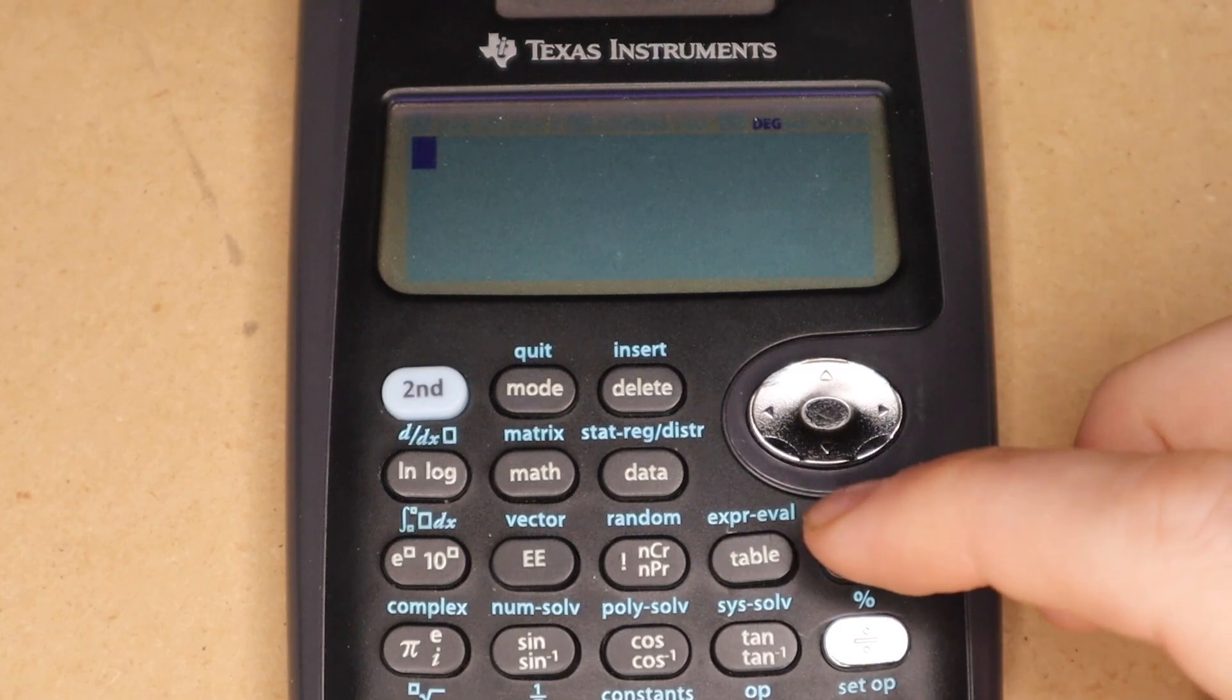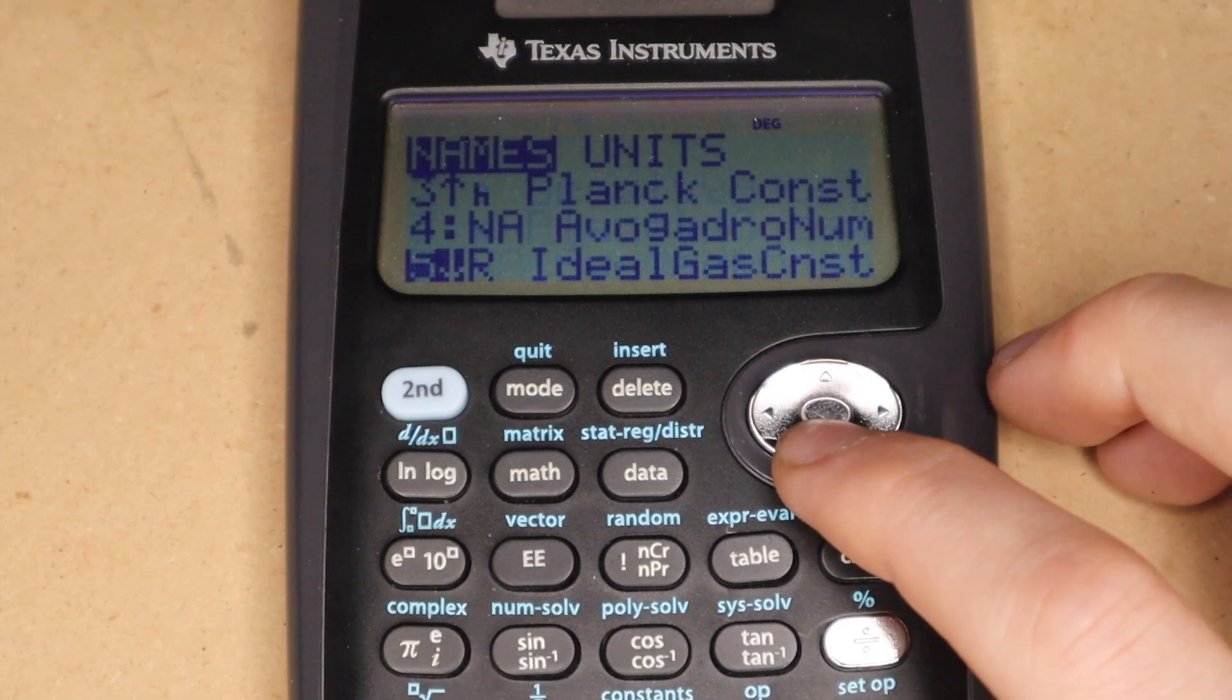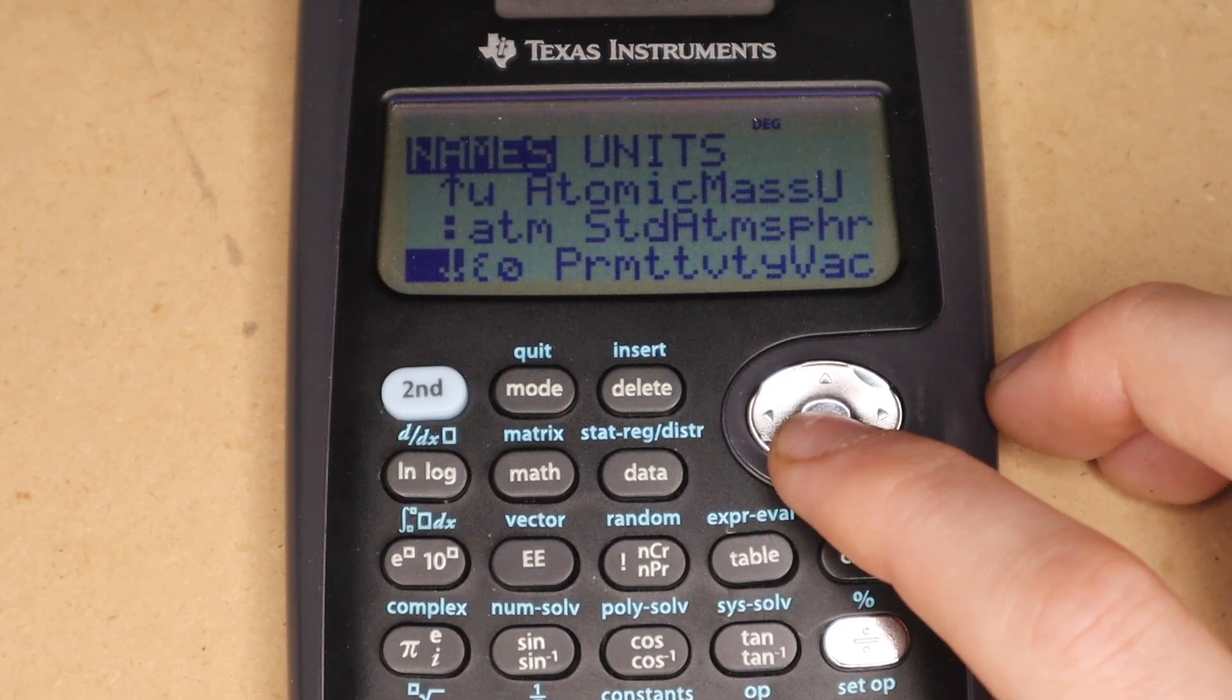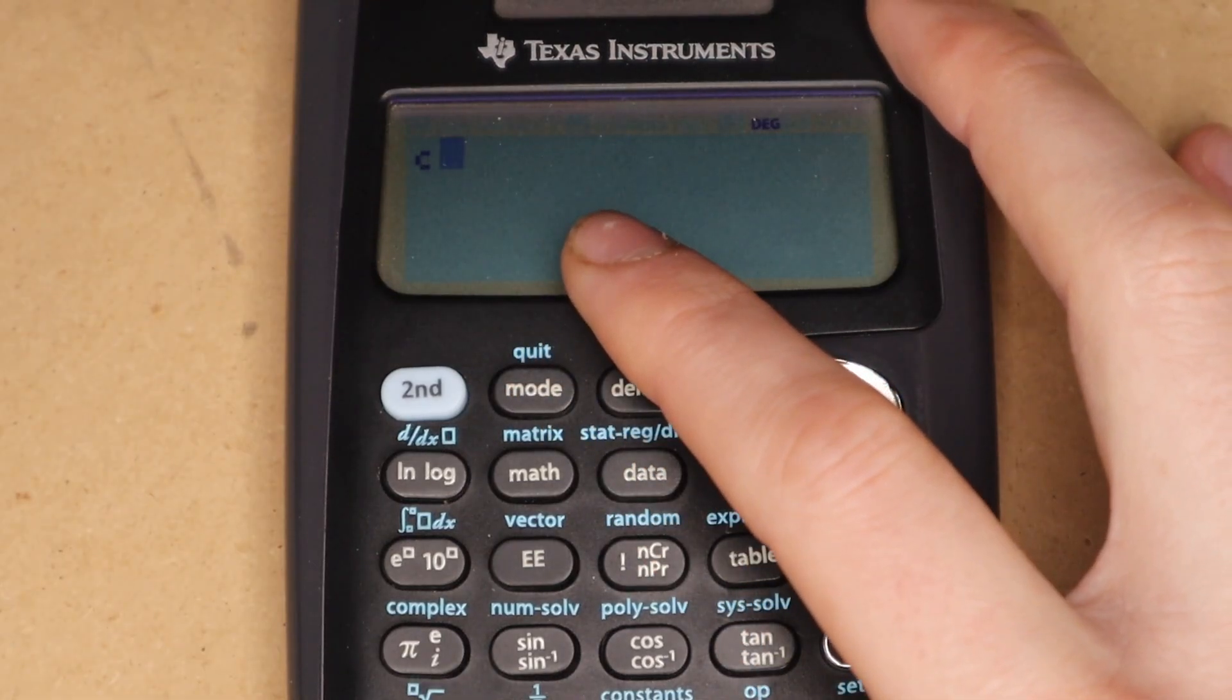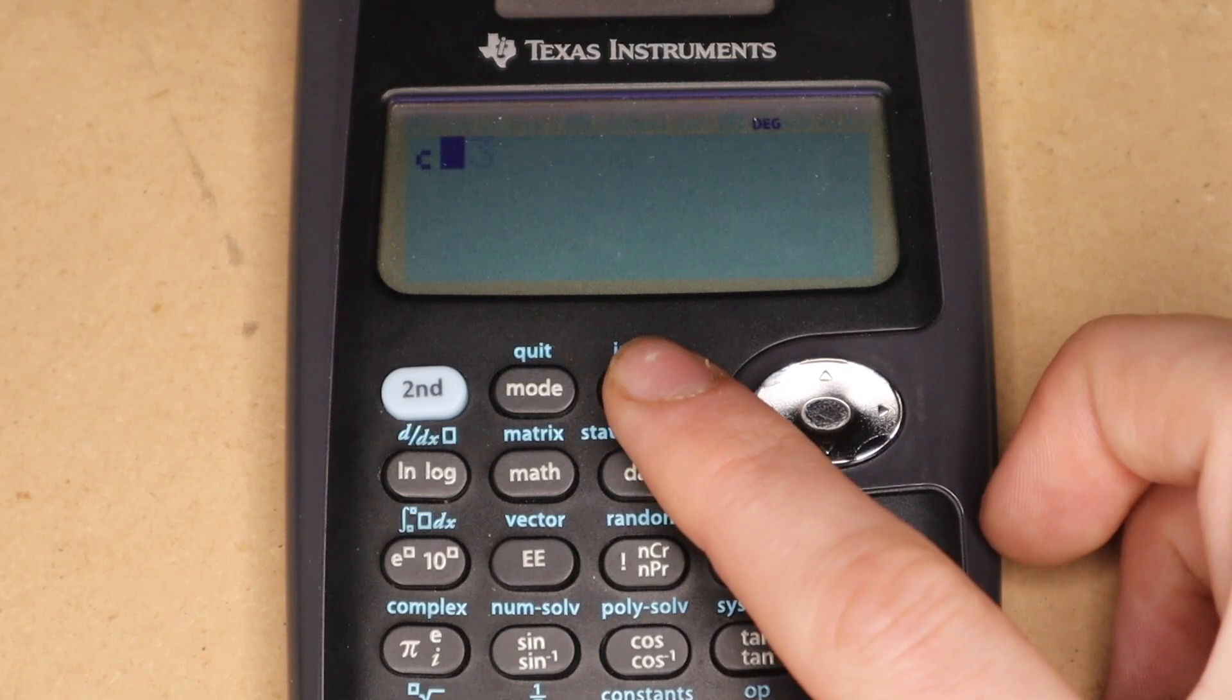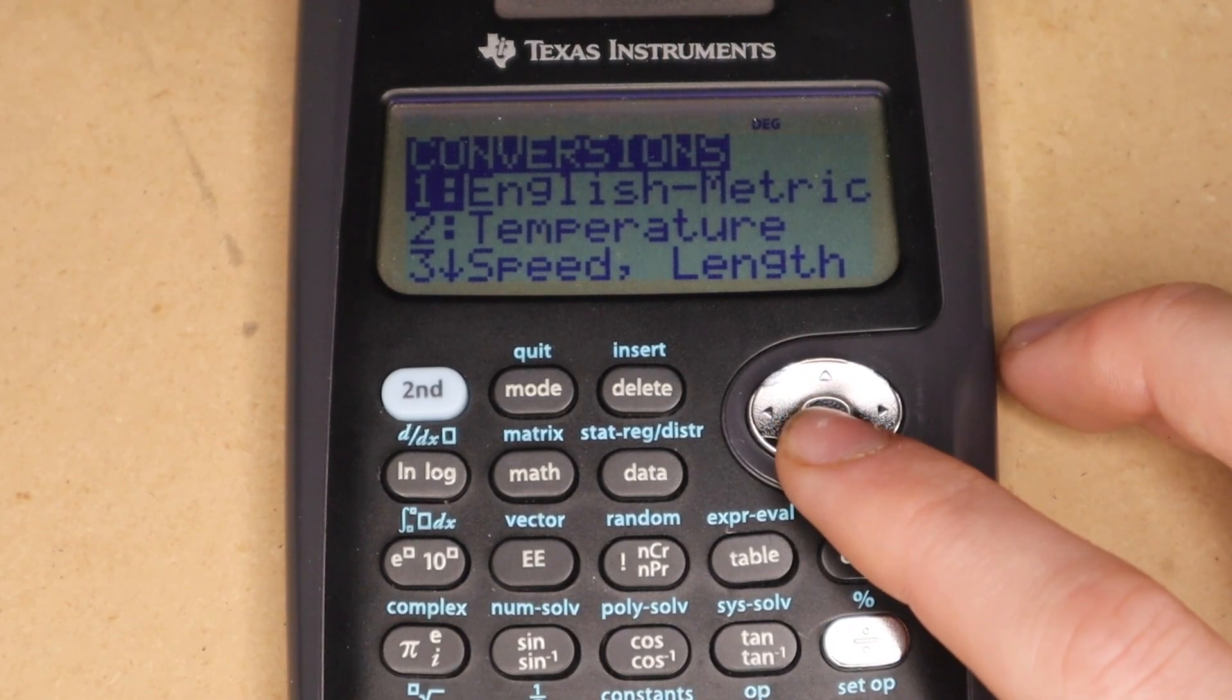So next up is the constants and unit conversions. You can go to this menu here, and you get a list of quite a few very common physics and chemistry constants. And you can scroll through, and then pick one, and just press enter, and it will enter it here in the calculation screen. And you can do whatever you want with that number. But if we just go ahead and evaluate C, you can see that's equal to the speed of light.